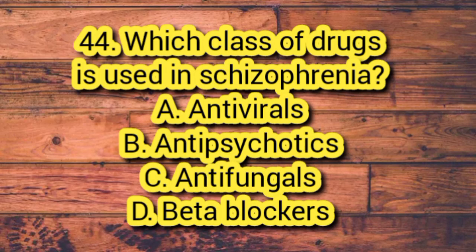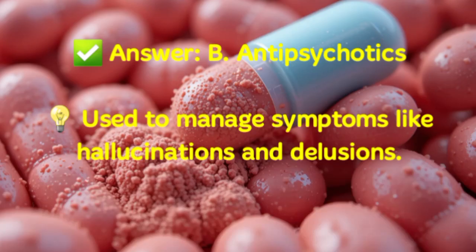Question 44. Which class of drugs is used in schizophrenia? A. Antivirals. B. Antipsychotics. C. Antifungals. D. Beta blockers. Answer: B. Antipsychotics. Used to manage symptoms like hallucinations and delusions.